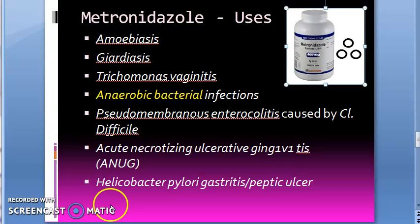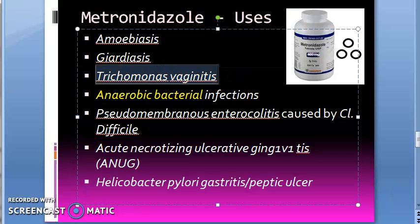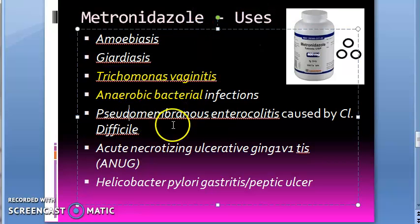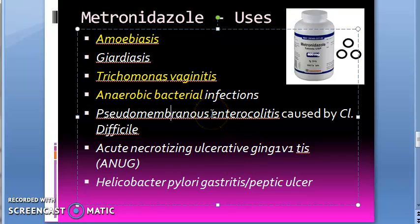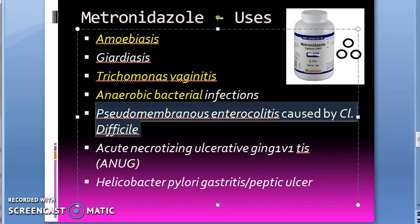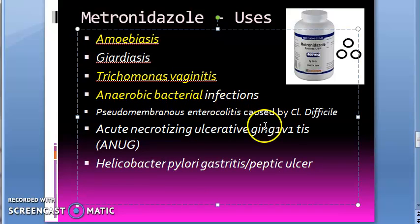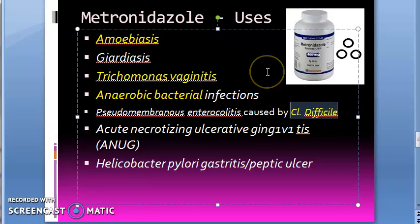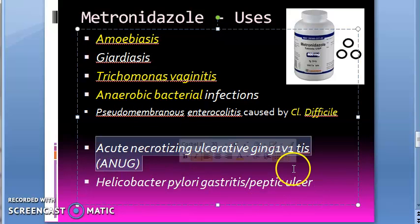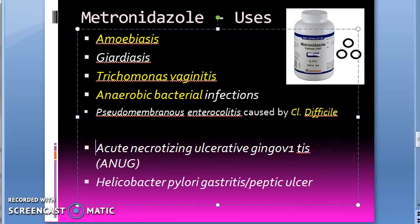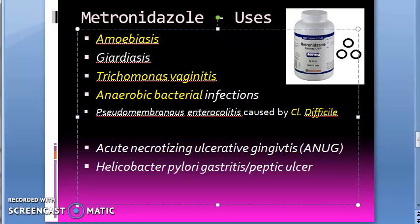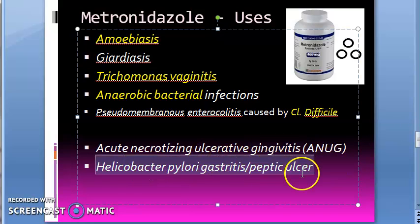Uses of metronidazole: it was originally used for Trichomonas vaginalis, then found effective against amoebiasis — amoebic dysentery — and also against Giardia lamblia. It is also useful for superinfection caused by Clostridium difficile, which causes pseudomembranous enterocolitis.